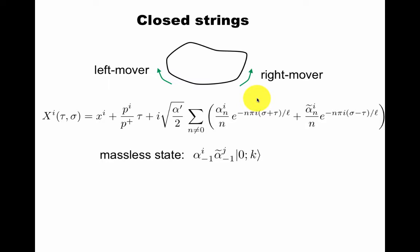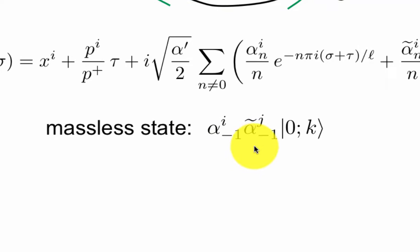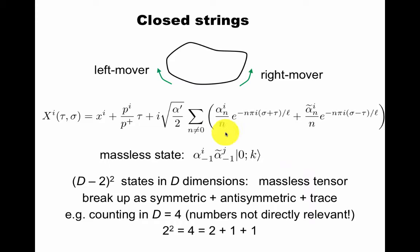For closed strings, solve the wave equation. For closed strings, I get something very similar to the open string, except I get left movers and right movers that I denote by α̃. A massless state here by the same logic as before will need to have an oscillator. Now we'll have an oscillator in each of the left and the right movers. So this is a, from the space-time point of view, this is an object that has two space-time vector indices. It has two indices, meaning there are (d-2)² states in d dimensions by the previous argument. This is a massless tensor then. It breaks up as a symmetric plus anti-symmetric plus trace.